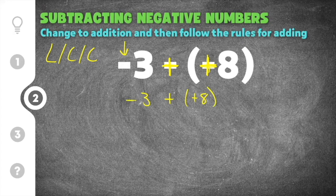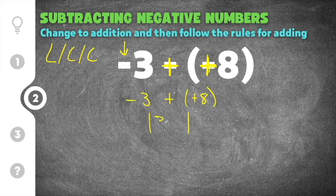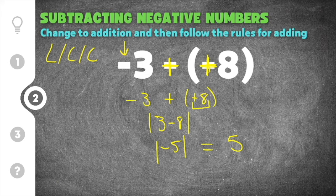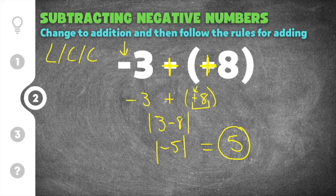When you're adding two numbers that have different signs, you subtract them and keep the sign of the larger number. We do the absolute value of three minus eight, which is negative five, and the absolute value of negative five is positive five. The sign on your answer matches whichever number is larger — we have negative three and positive eight, and eight is larger and positive, which means our answer is also positive. So the solution is positive five.